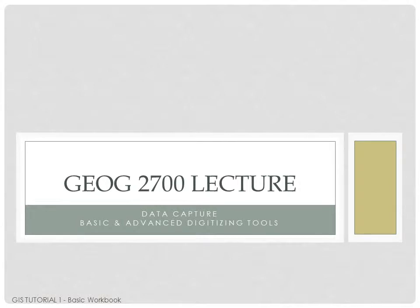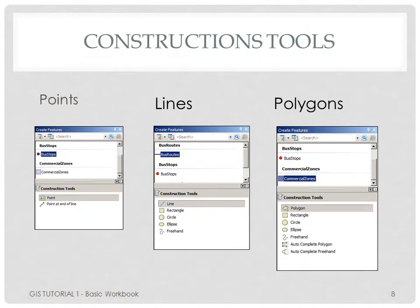Next we'll take a look at data capture and basic and advanced digitizing tools. Like everything else in GIS, you need to be aware of the type of data you're working with — are you creating points, lines, or polygons? You'll make those decisions before you start your digitizing session. The create features dialog box is where you will select the file you are digitizing in and what type of construction tools you're using for that particular digitizing session.